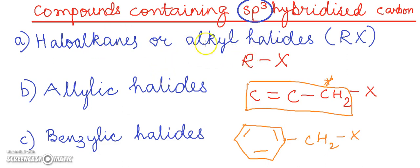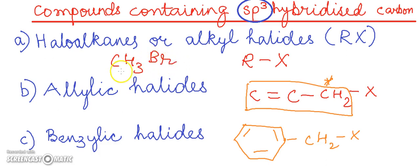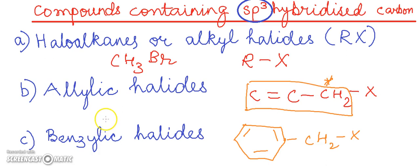For haloalkanes or alkyl halides, the general examples are methyl bromide or methyl chloride. For the allylic halides, we can have the example 3-chloropropene.